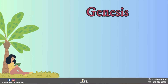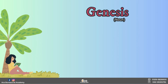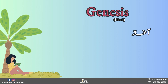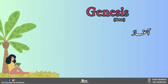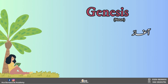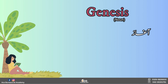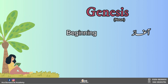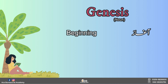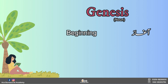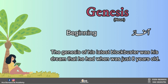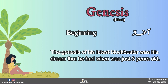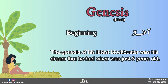Genesis ये एक noun है। इसका उर्दू meaning है 'आग़ाज़'। अगर हम इसका English meaning देखें तो that is 'beginning'. चलें इस word को sentence में यूज़ कर लेते हैं: 'The genesis of his latest blockbuster was a dream that he had when he was just 8 years old.'